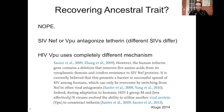This quote from Kluge 2014 explains what's going on here: 'However, the human tetherin gene contains a deletion that removes five amino acids from its cytoplasmic domain and confers resistance to SIV NEF proteins. It is currently believed that this presents a barrier to successful spread of SIV among humans, which can only be overcome by switching from NEF to other viral antagonists. Indeed, during adaptation to humans, HIV-1 group M and less effectively N viruses evolved the ability to utilize another viral protein, VPU, to counteract tetherin.' So it's not only that VPU is doing a different function from what it normally does — it's doing that function in a completely new way compared to all of the other things that do that function, because the SIV NEF and VPUs do it using part of the tetherin protein that is missing from humans. So this is definitely 100% a new trait due to mutations with zero loss of function or fitness of anything associated with it.